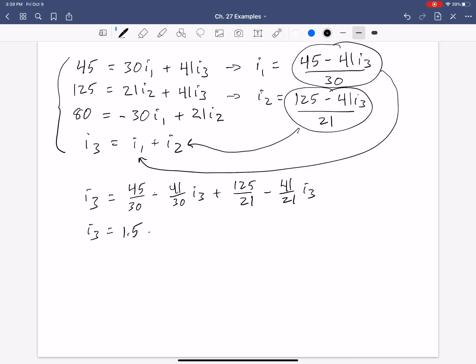And then 125 over 21, 5.95. And then 41 over 21 is 1.95. So now, combining like terms, we should have 1 plus 1.37 plus 1.95. And that should give us 1.58 times I3. And then everything that remains is simply 1.5 plus 5.95.